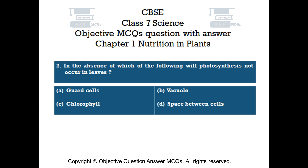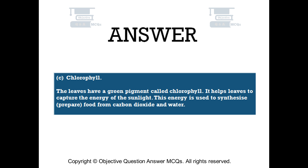The right answer is option C: chlorophyll. The leaves have a green pigment called chlorophyll. It helps leaves to capture the energy of sunlight. This energy is used to synthesize food from carbon dioxide and water.